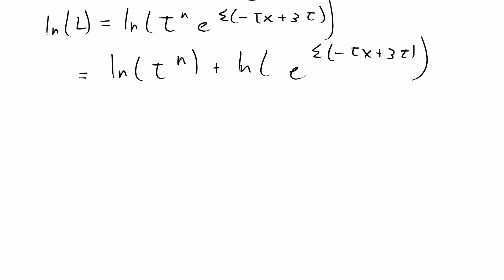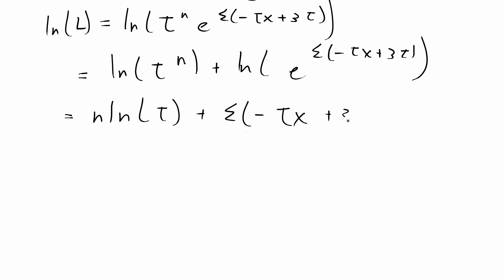From here we can simplify. The natural log of tau to the n — I can bring the n out front — giving n times ln(tau). Then the natural log of e to something is just equal to the exponent itself, so that term becomes the sum of negative tau x plus 3 tau.